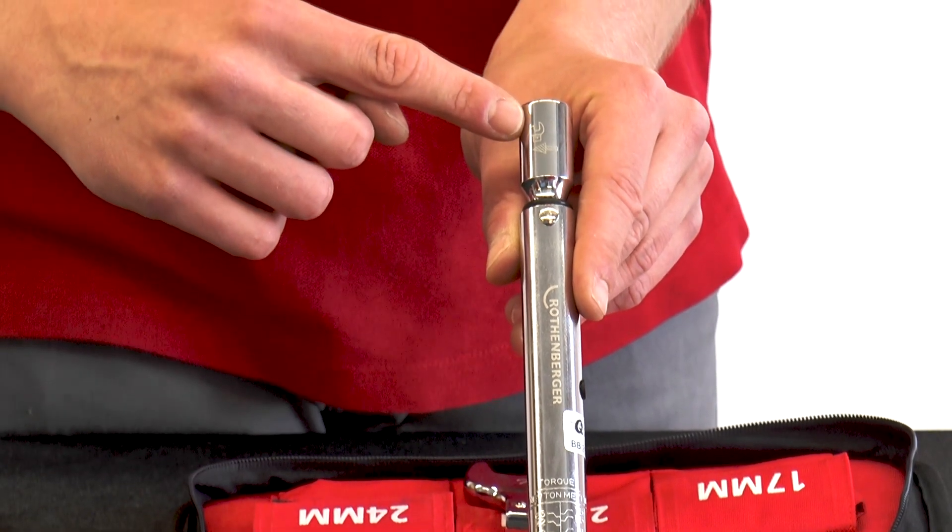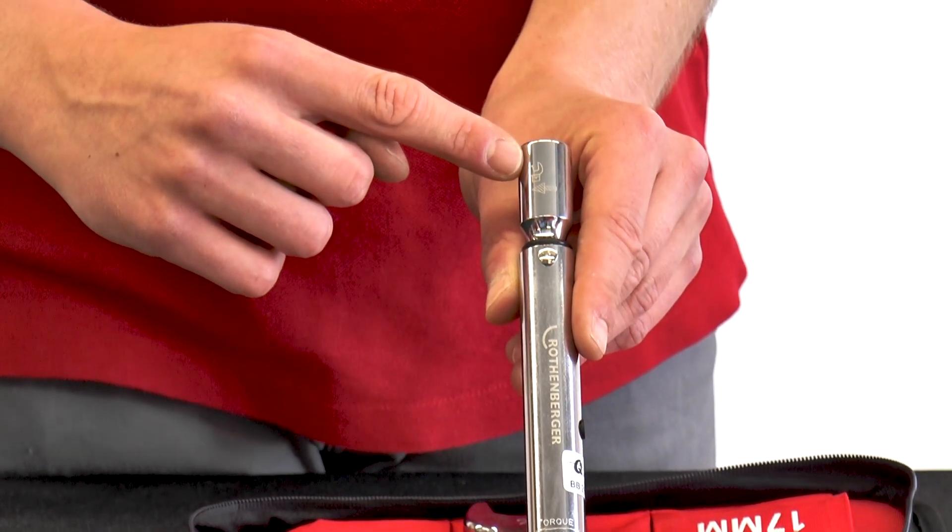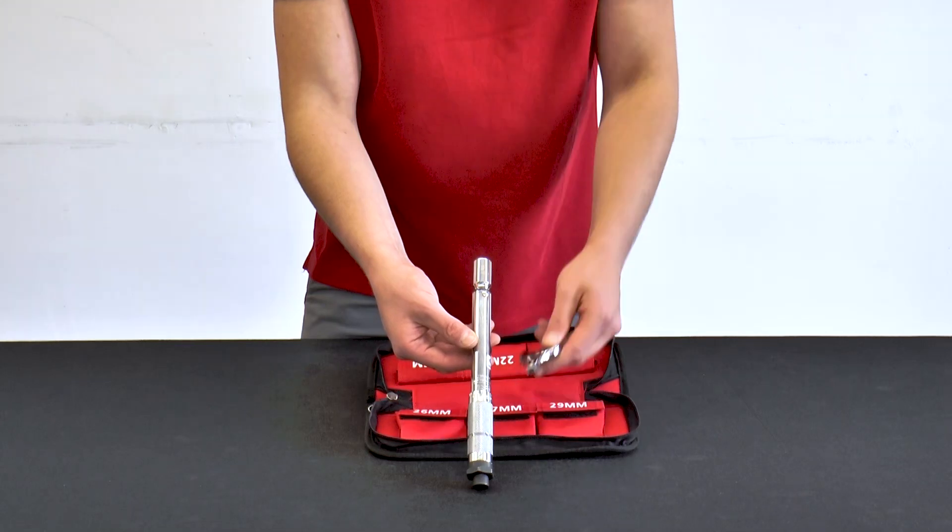Here, a pictogram is shown on the head of the torque wrench, which indicates the direction in which the opening of the jaw must point.